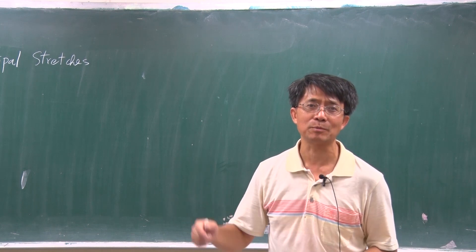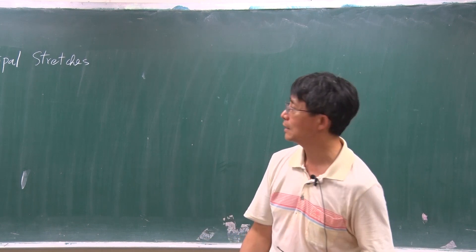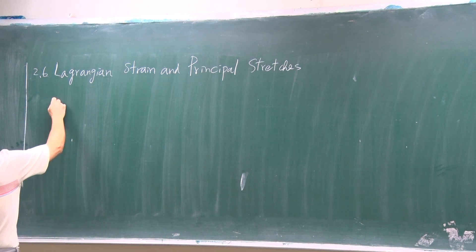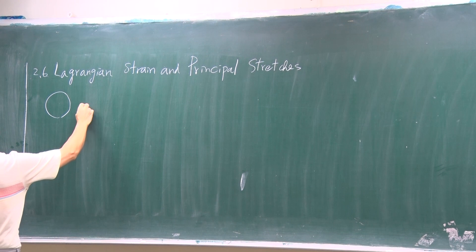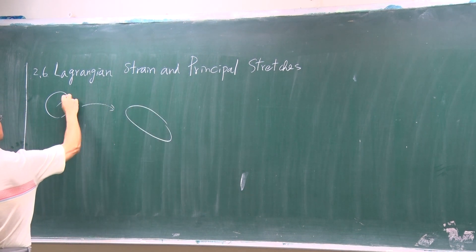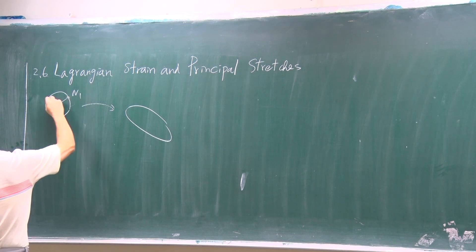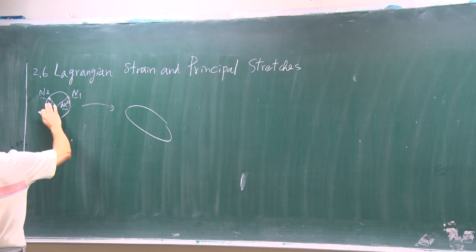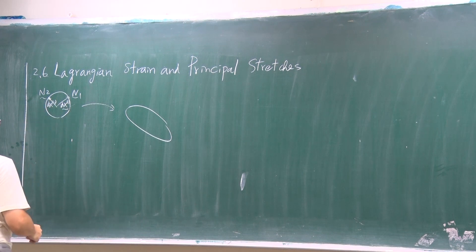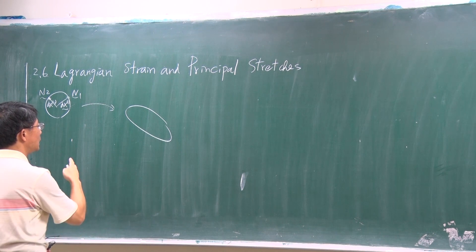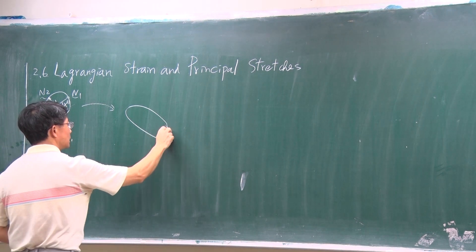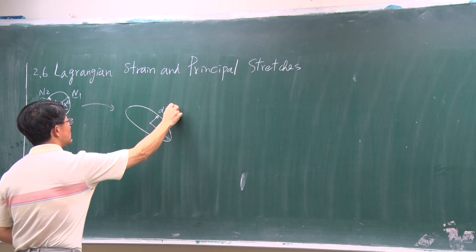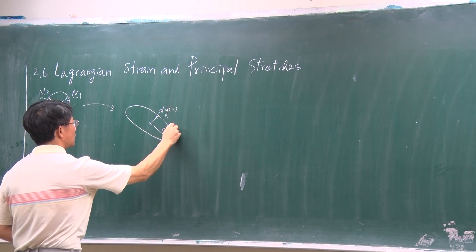Now we have already come to the last step of this journey. We have already explained this picture in the last class, so I think you have already understood what they are. Now, we have two material lines in the principal direction.